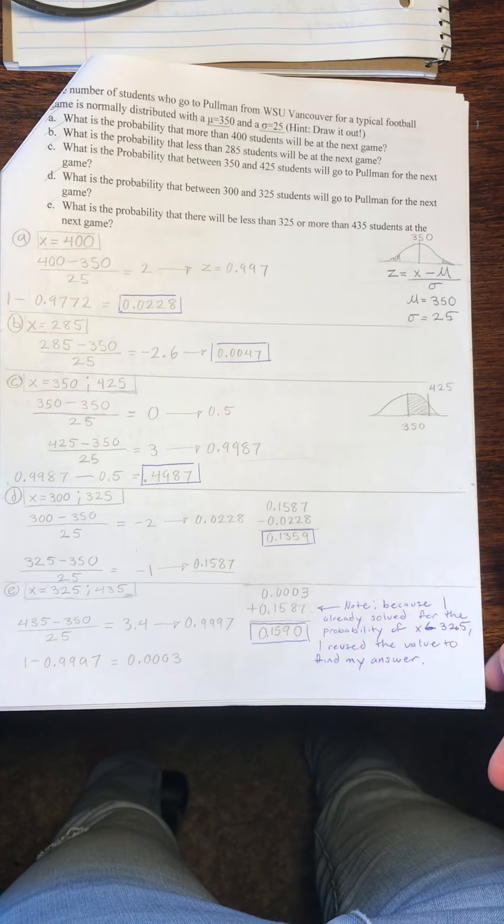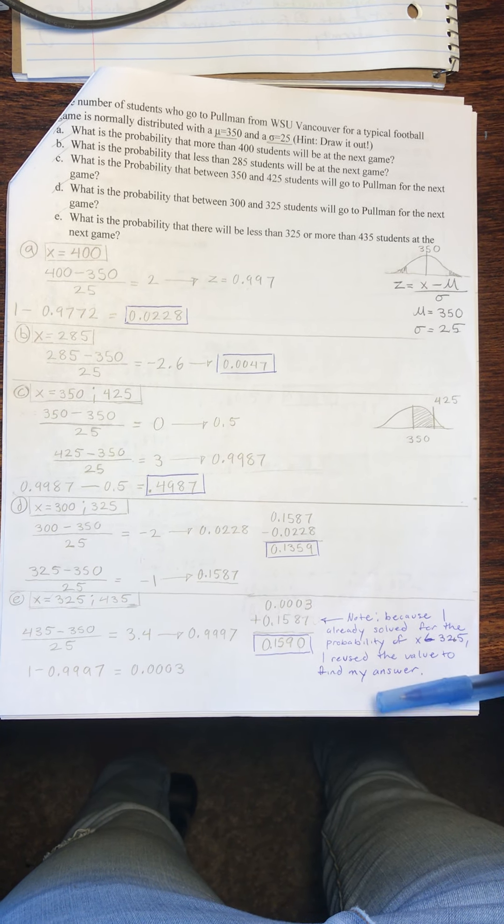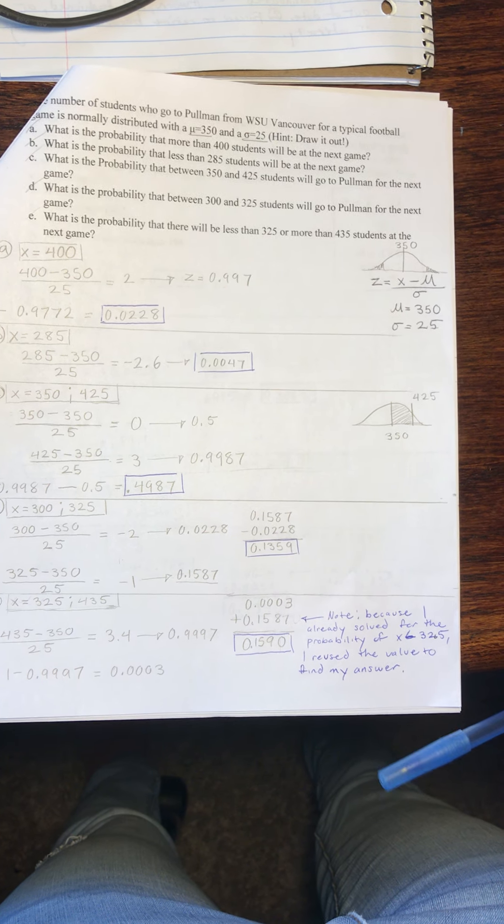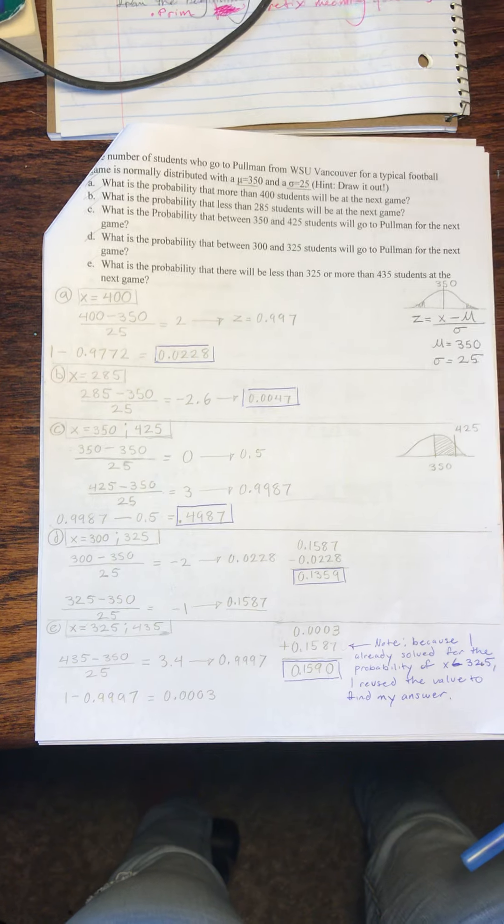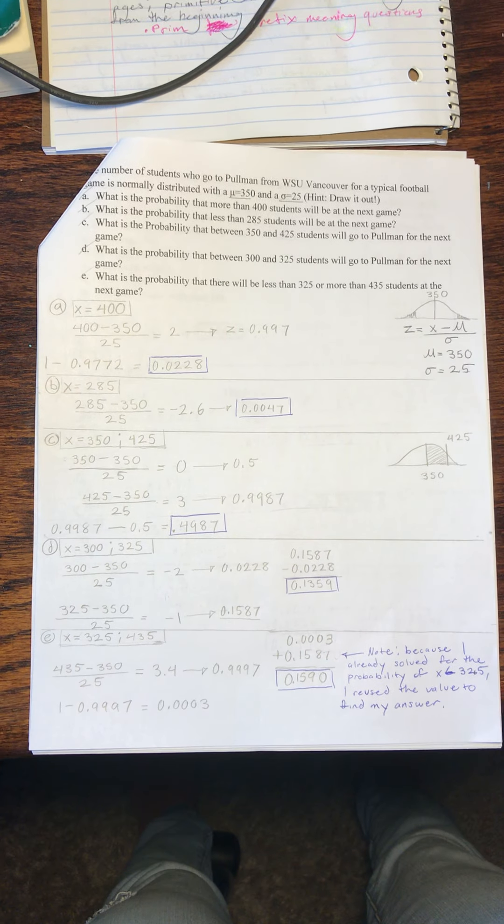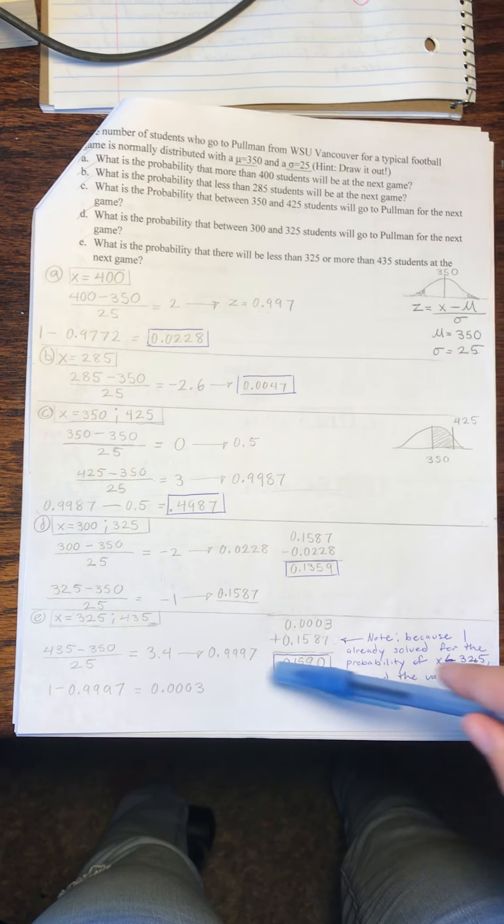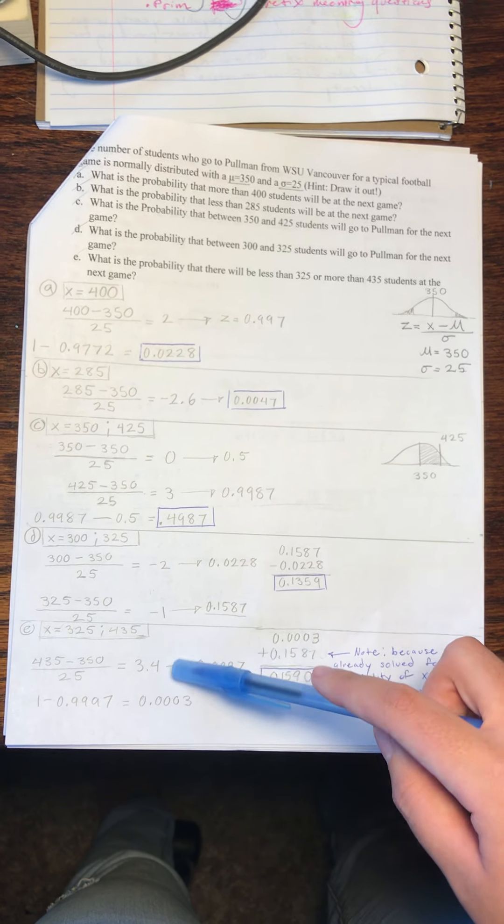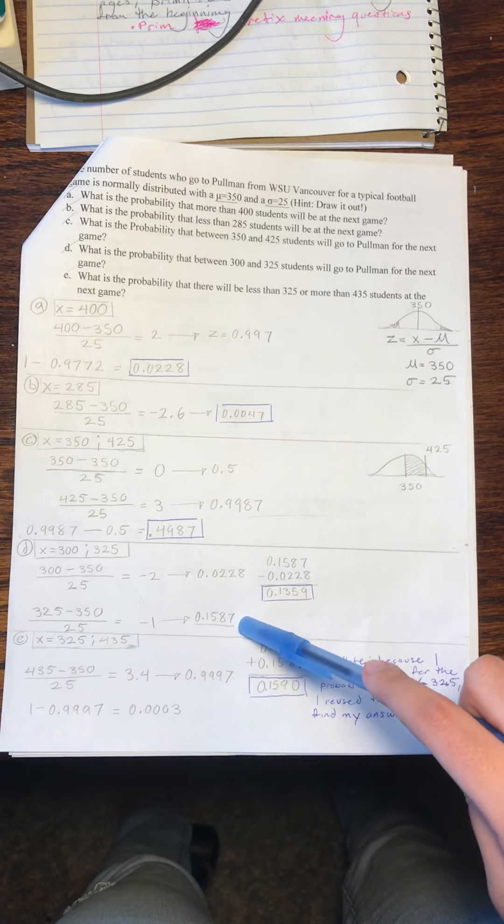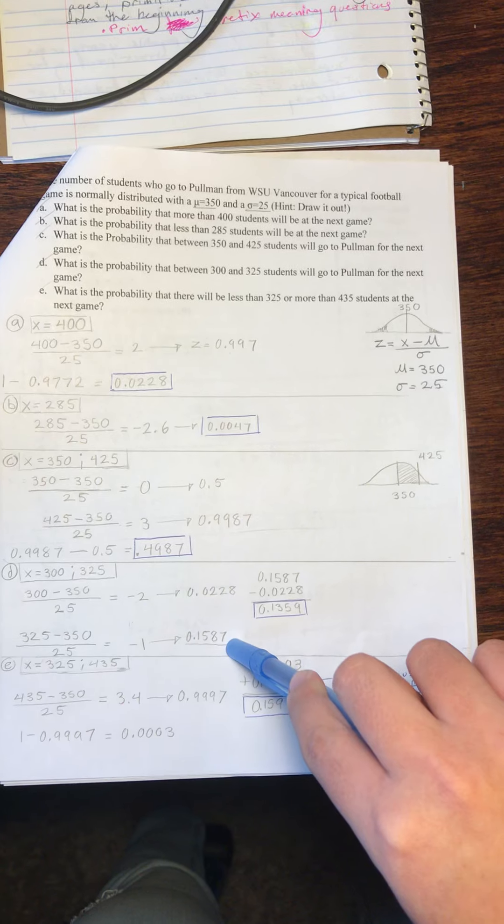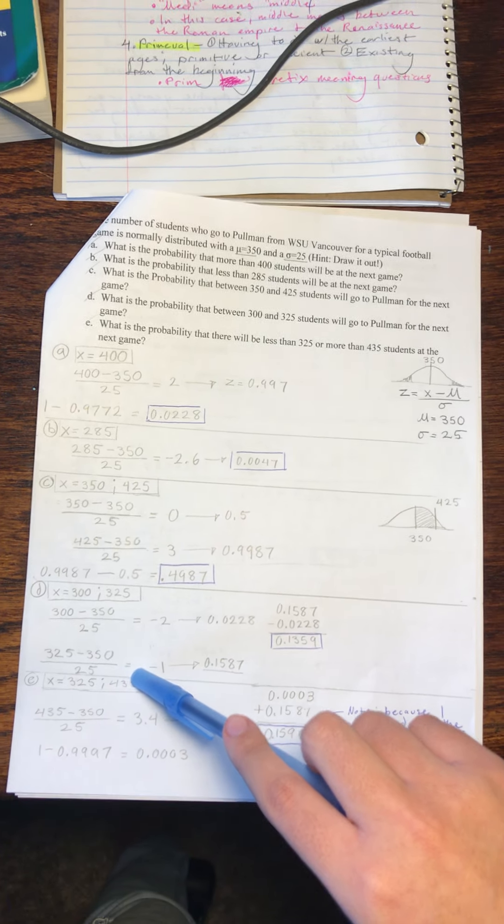For E, we are looking for the probability that there will be less than 325 or more than 435 students at the next game. We are looking for the ends of the distribution. Since we had already solved for 325 up here, we will not be solving that again. We will just be solving 435 first.